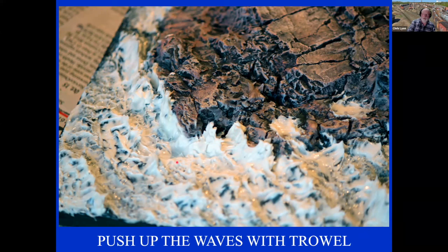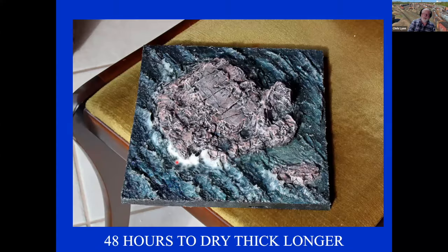After it dries, you can see what happens where it's thicker — it's still white. But where it has dried, it goes really nice and glossy and clear, and you get the water effect with light and dark wave lines. On your model railroad you can have much more space between these waves. Or you may not have any waves at all, and this whole process wouldn't be required — you could just stipple it on or use a lighter standard gloss gel for a much smoother process.